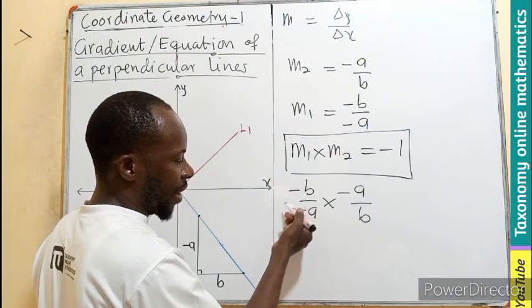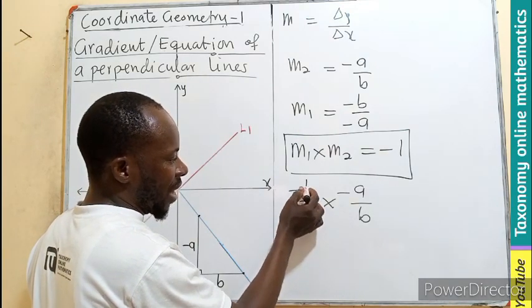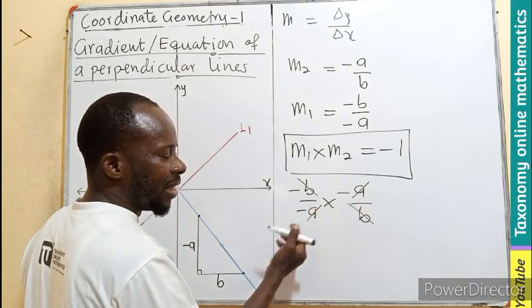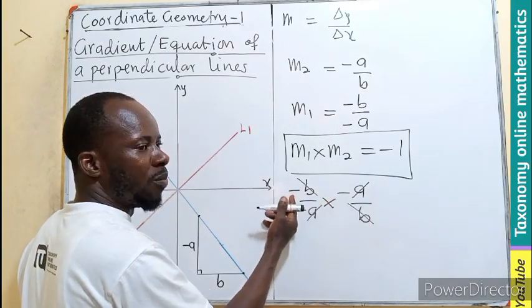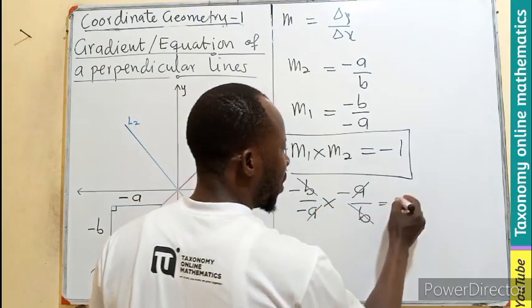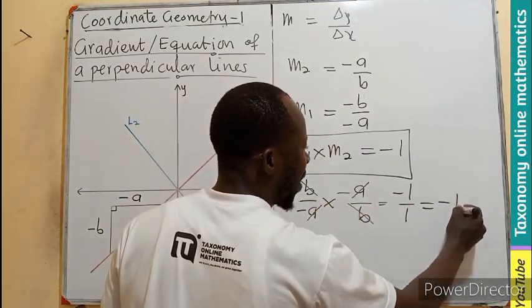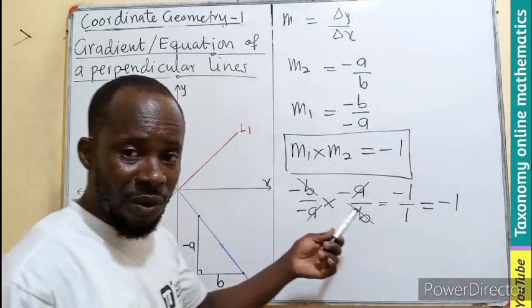The gradient 1 is minus B over minus A times gradient 2 minus A over B. We can see that, forget about the sign, if I see B here, it will cancel this. A here will cancel this. Then negative times negative, positive. So, we are going to have negative 1 divided by 1. And that gives us what? Negative 1.